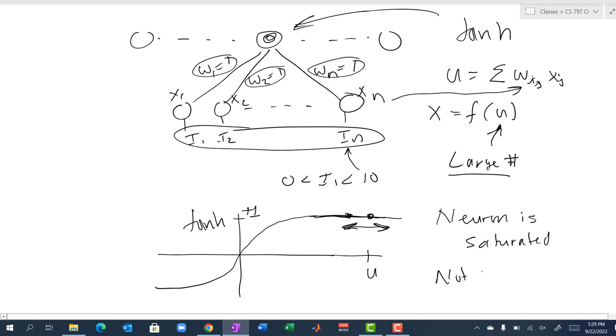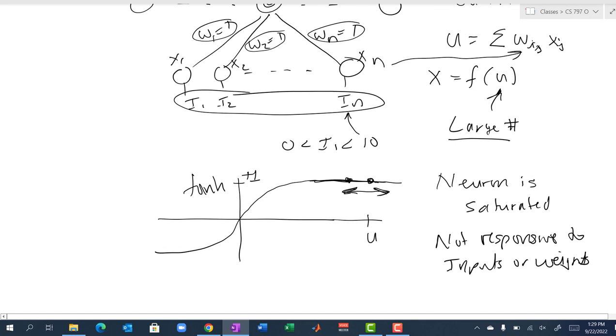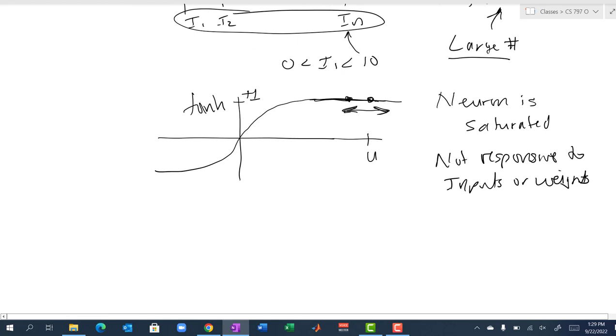It's not responsive to inputs or the weights. That's not good because that means you change an input and you still get the same output. You change a weight, you still get the same output. Also, if you remember backprop learning, let's say we want to train that neuron.